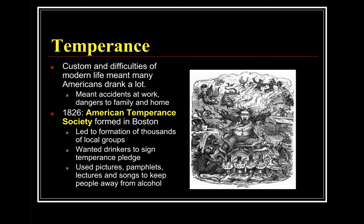Another major reform movement was temperance. Custom and the difficulties of modern life led many Americans to drink heavily, resulting in workplace accidents and dangers to family life. As a result, the American Temperance Society was formed in Boston in 1826, leading to thousands of local groups. They wanted drinkers to sign temperance pledges — promises not to consume alcohol — and used pictures, pamphlets, lectures, and songs to keep people away from drink.